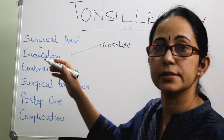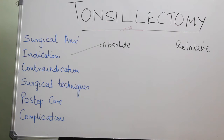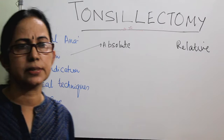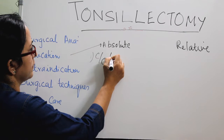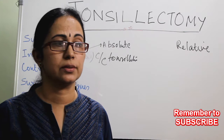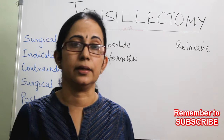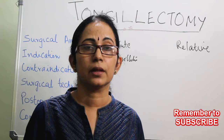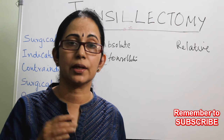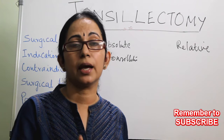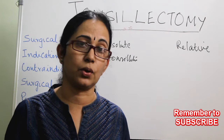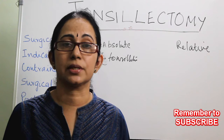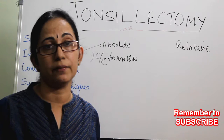Next are the indications. For all surgery, we divide indications into absolute and relative. For tonsillectomy there are only a few absolute indications. The first is chronic tonsillitis. The criteria are: more than six episodes in the current year; or five episodes per year in the preceding two years; or three episodes per year in the preceding three years. There should be signs of tonsillitis at each episode — the patient cannot simply claim chronic tonsillitis.